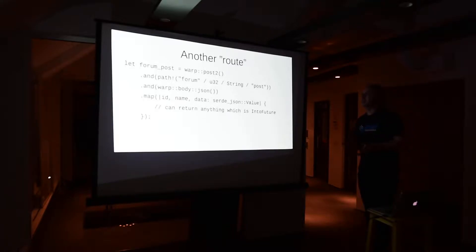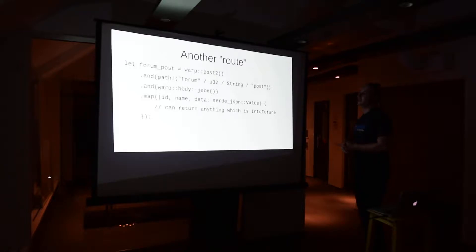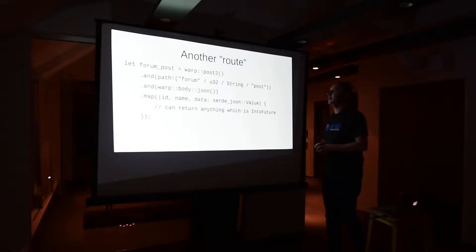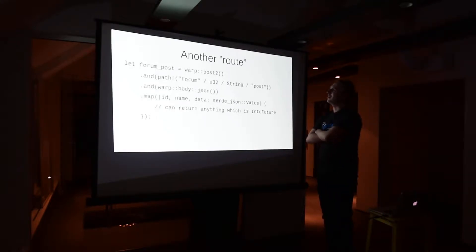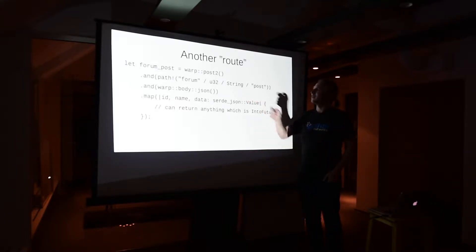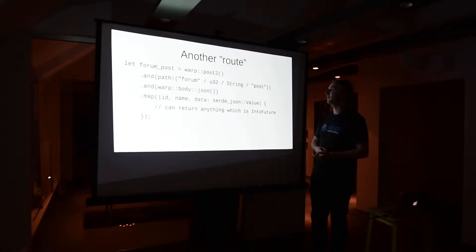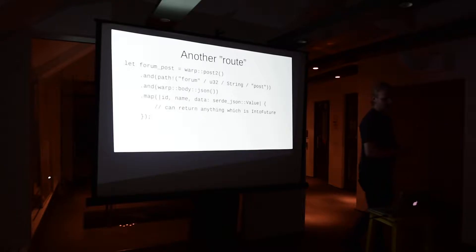You ask Rust to call a closure and you get the request context unpacked. You're supposed to take that and return something back which can be considered a response. There are all kinds of common trait bounds, which means you can return things like strings but also much more complex things like futures. Here's a slightly more complex example — we're using the post filter to look for POST requests, and we look for a path which has two separate parameters.